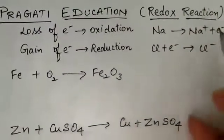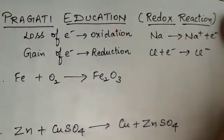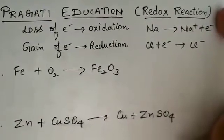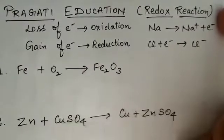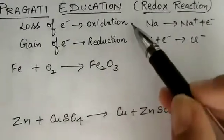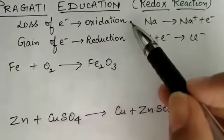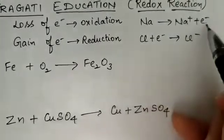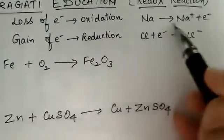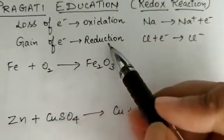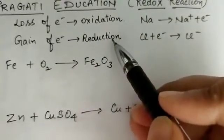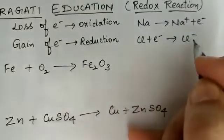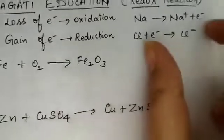Hello my dear students, today I am going to discuss redox reactions — how in a particular reaction we can identify which process is oxidation and which is reduction. As I told you in our regular class, whenever there is loss of electron we call that process oxidation, like sodium lost an electron. If in a reaction there is gain of electron, like chlorine gaining an electron and becoming an anion, we call that process reduction.